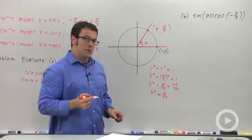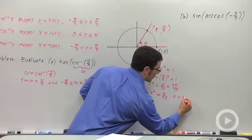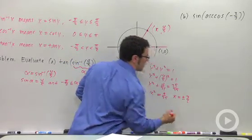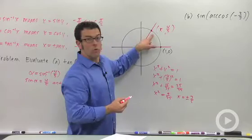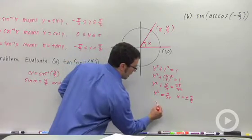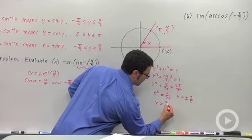So x is going to be plus or minus 3 over 5. Now, which is it? Well, we're in the first quadrant. X has got to be positive. So x is 3 fifths.